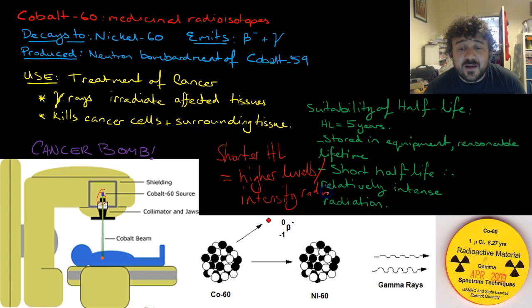That makes sense. If something has a fast half-life, that means half of its mass is turning to something else very quickly. So in about five years, half of that cobalt will be nickel-60.